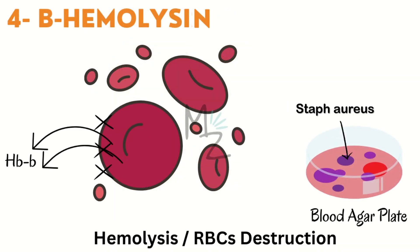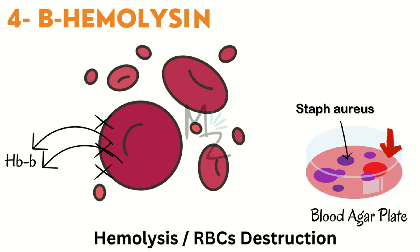The fourth exotoxin is hemolysin — specifically beta hemolysin. This toxin destroys the membrane of red blood cells, releasing hemoglobin out of the cell, ultimately causing red blood cell destruction. To detect beta hemolysin, we put Staphylococcus on blood agar — it destroys the blood cells and leaves empty spots on the agar. This process is called hemolysis.